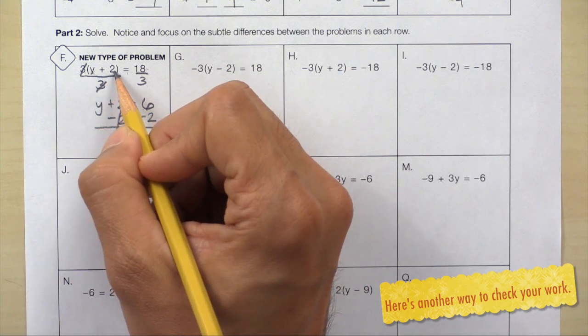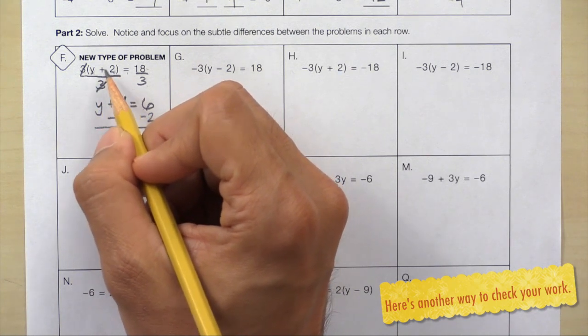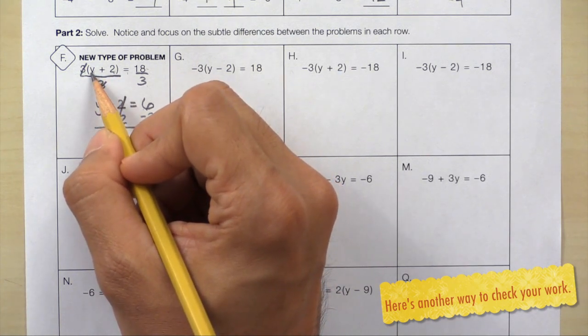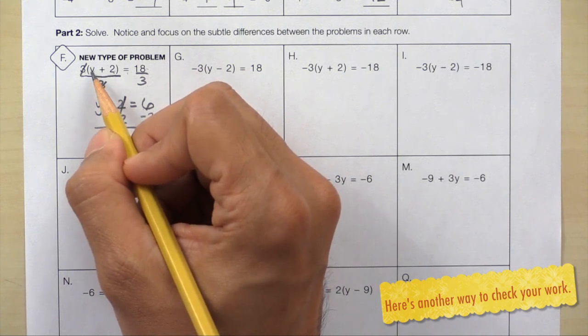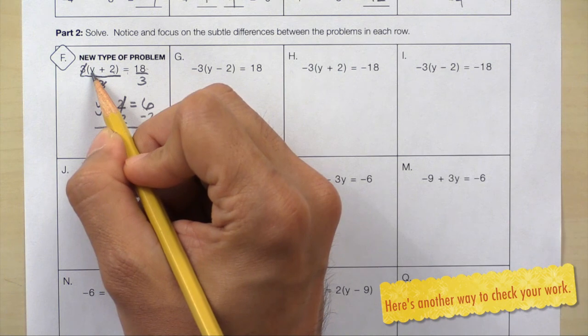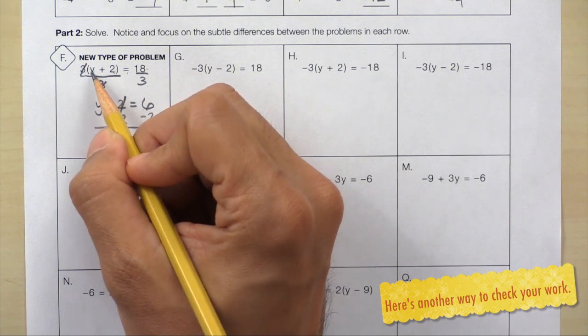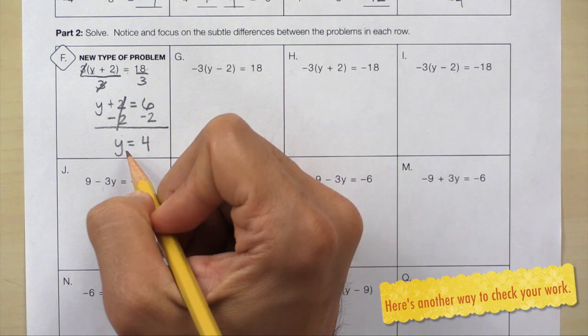So everything inside the parentheses has to equal 6. What number plus 2 gives you 6? And since we know that 4 plus 2 equals 6, that explains why y equals 4.